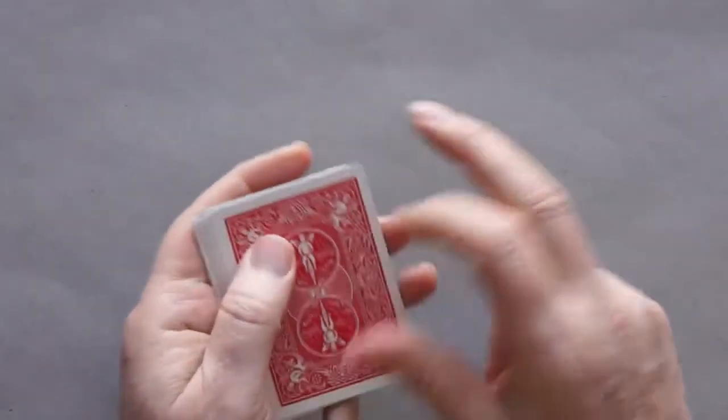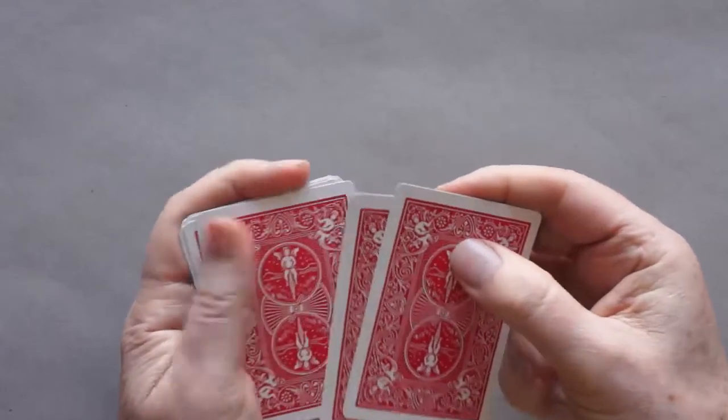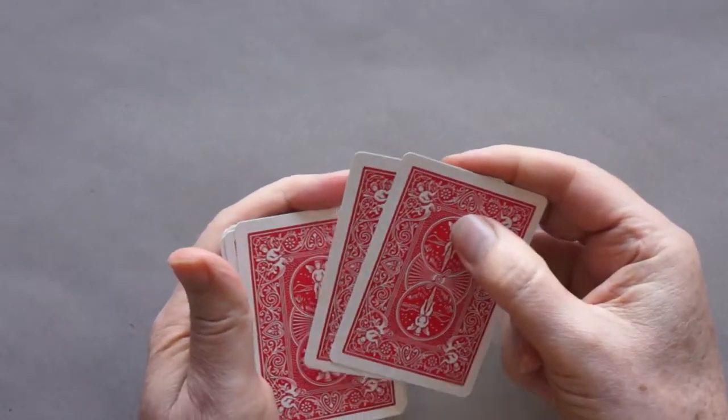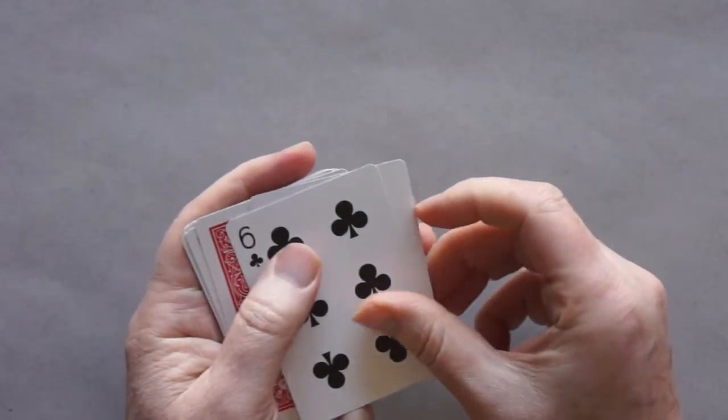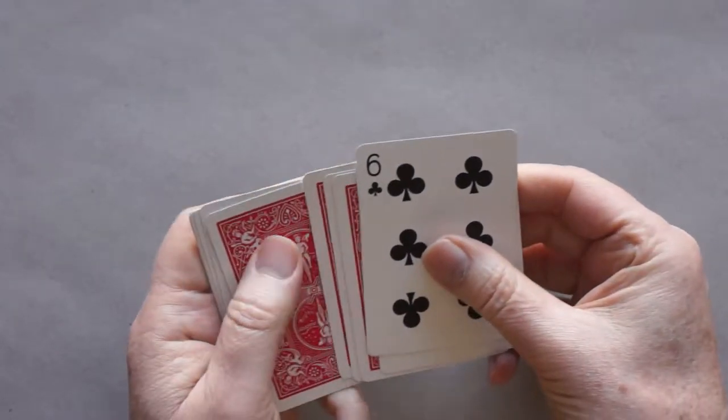So let's repeat those two steps. Now we're going to turn over the two cards that are now at the top as a pair. And then we're going to cut anywhere.